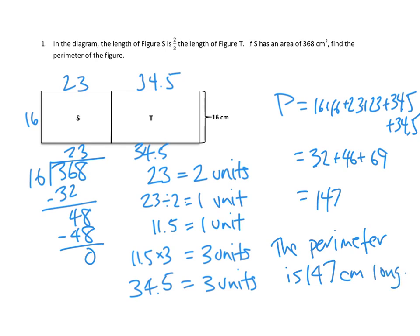So we could use what we know about area to figure out one of the lengths. We could use what we know about the ratios between the sides — this side is two-thirds of this side — to figure out the length of T. Once we have the sides, the opposite sides are equal, and then perimeter is really easy — just add them all up. Feel free to re-watch if that was a little bit fast for you, or if you didn't understand one of the parts. Thanks for joining me for another episode of Mr. Kong Has Problems. I'll see you again next time. Bye-bye.